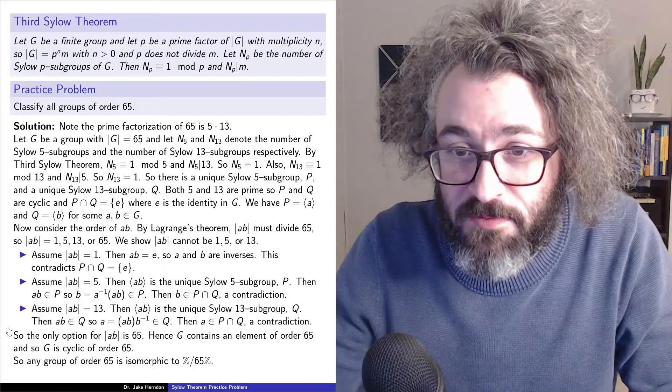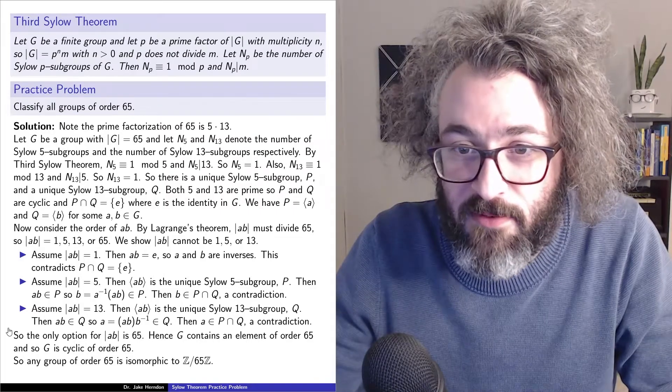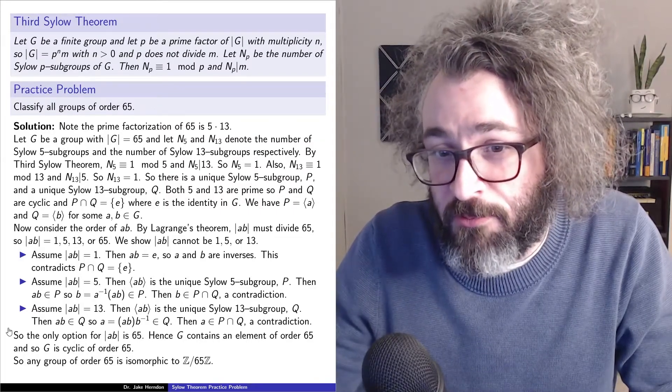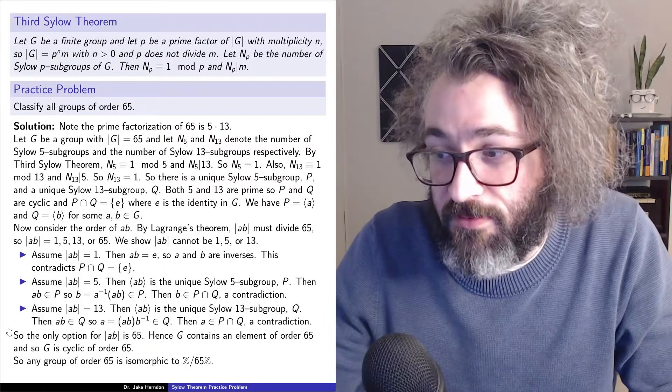So there you go. The classification of groups of order 65 is there's really only one group of order 65, the cyclic group.